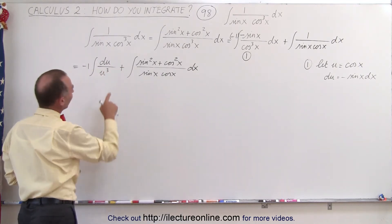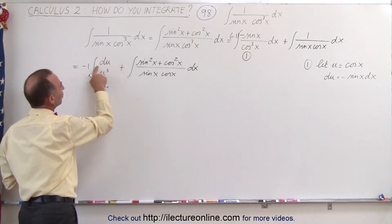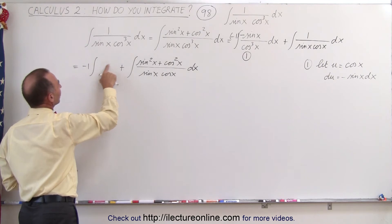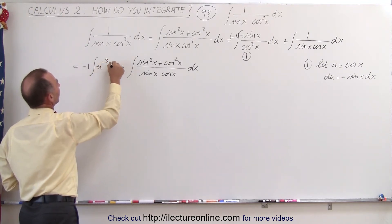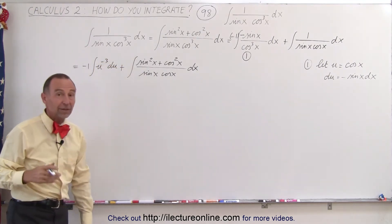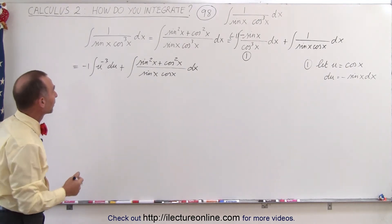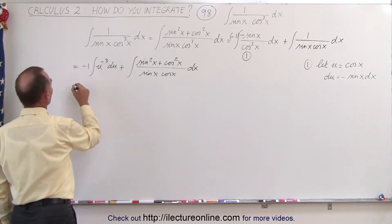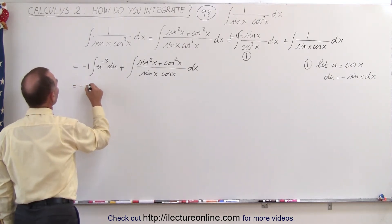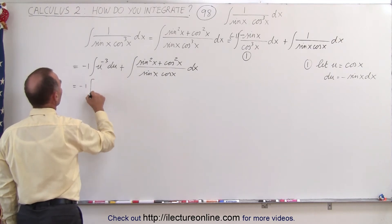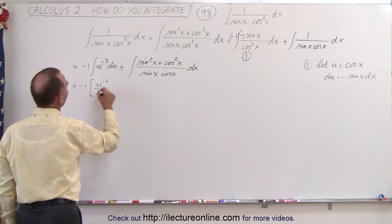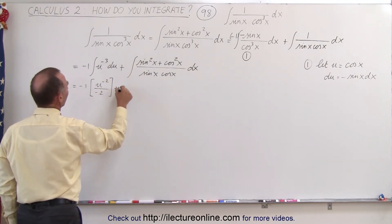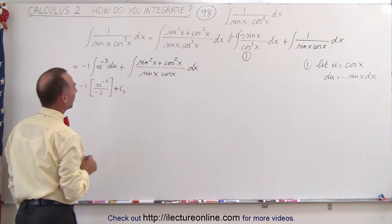Instead of writing this as 1 over u cubed, I'm going to write it as u to the minus 3 du. That's better because now we can simply integrate that. This becomes equal to negative 1 times u to the minus 2 divided by negative 2, plus a constant of integration c1.